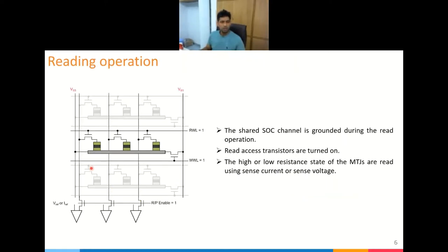Now let's look at how we perform reading and writing in this particular architecture for SOT. The reading operation is simple: you turn on the read access transistor, which grounds the shared channel, and then you read the resistance of each individual MTJ using the read lines. This is how the read operation is carried out.